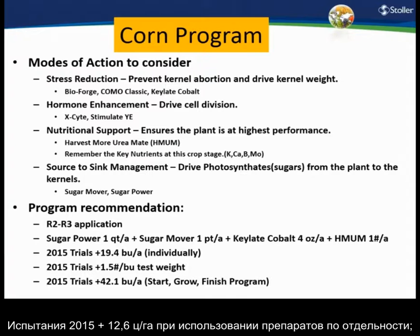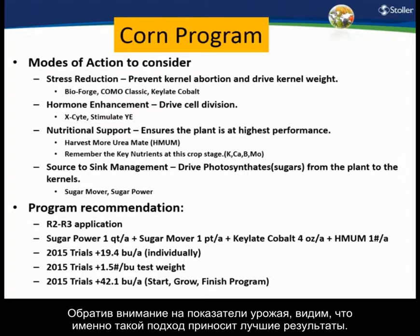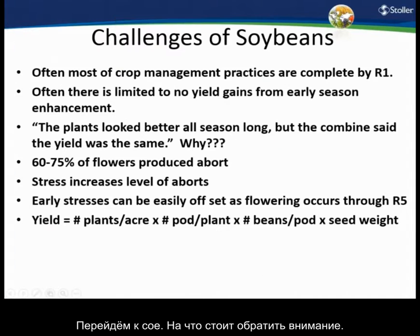The program I recommend for the R2-R3 application timing: a pint of Sugar Power, a pint of Sugar Mover, four ounces of Chelate Cobalt or eight ounces of Bioforge, and a pound of Harvest More Urea Made — combining four different modes of action. In 2015 trials individually this added 19.4 bushels and a pound and a half of test weight. Combined Start-Grow-Finish programs showed a 42.1 bushel increase, consistent with what high-yield growers are achieving.